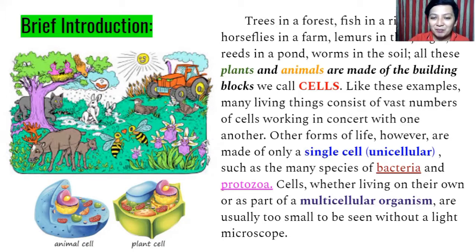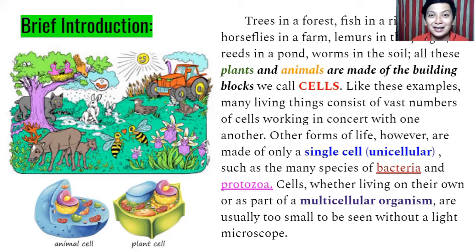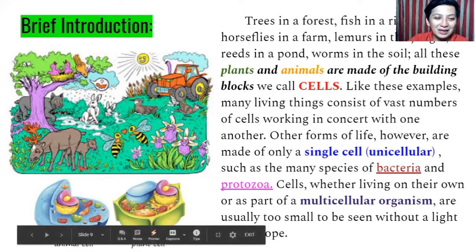Whether living on their own or as part of a multicellular organism, cells are usually too small to be seen without a light microscope. Multicellular organisms are those that have a lot of cells — billions and trillions of cells — like animals and plants. This is an example of the animal cell and this is an example of a plant cell.